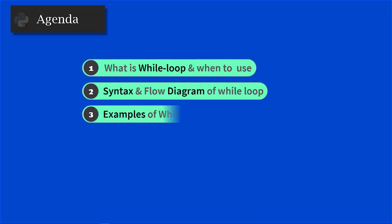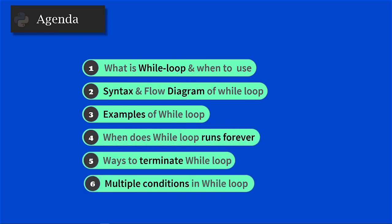Let's understand the agenda of this video. You will learn what is while loop and when to use it, the syntax and flow diagram, examples to accomplish while loop in Python, when while loop runs forever, how to terminate the while loop, and how to incorporate multiple conditions in while loop so that decisions are based on the cumulative outcome of those conditions. If you want to jump to a specific topic, make use of the content timestamps provided in the description.